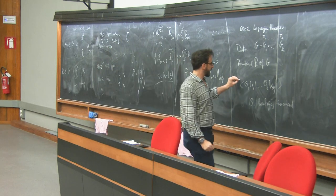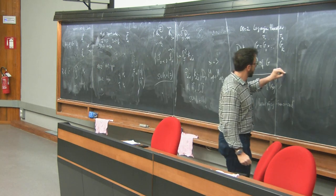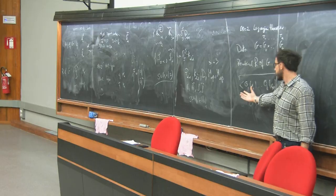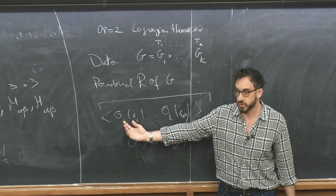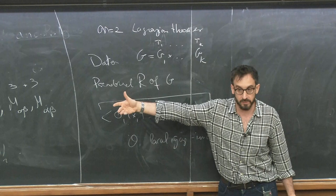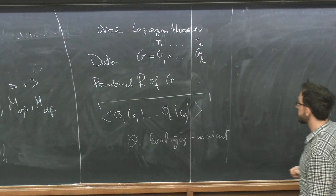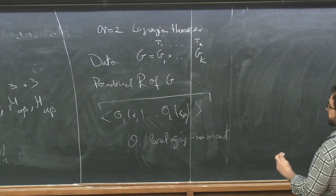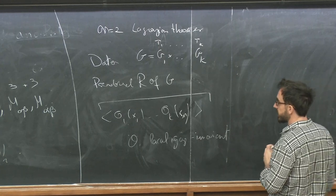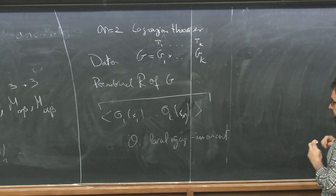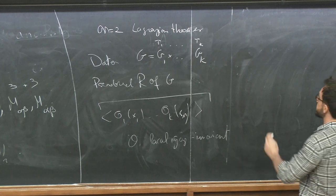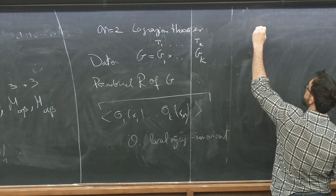The viewpoint I'm going to take is that local operators are the basic objects and we do not necessarily need to think of each of them as being a composite of something more fundamental. As a way of transitioning, let's give examples of what these local operators are in a Lagrangian theory.